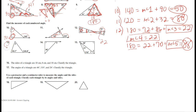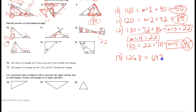Number thirteen. Exterior angle equals the sum of the two remote interiors. One hundred and twenty-six point eight equals sixty-nine point seven plus the measure of angle two. Subtracting sixty-nine point seven from both sides gives angle two equals fifty-seven point one.